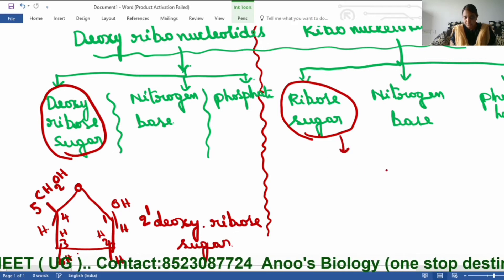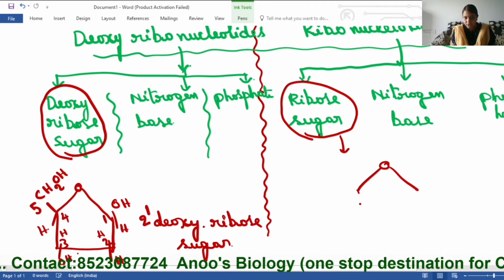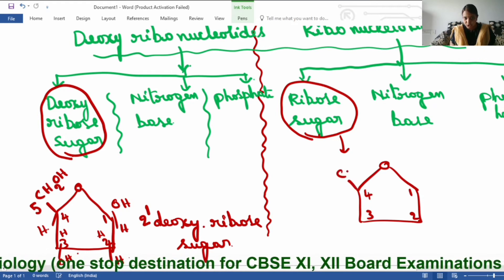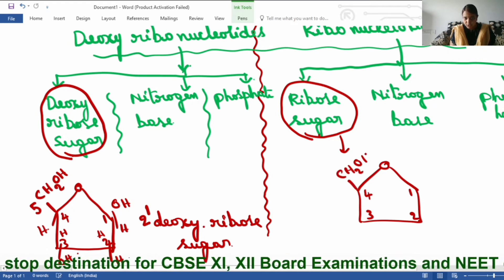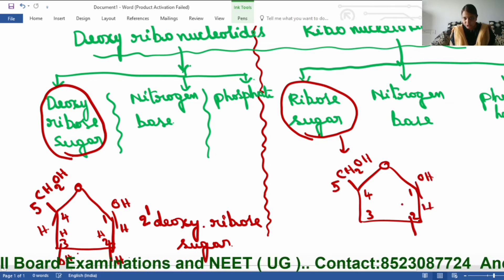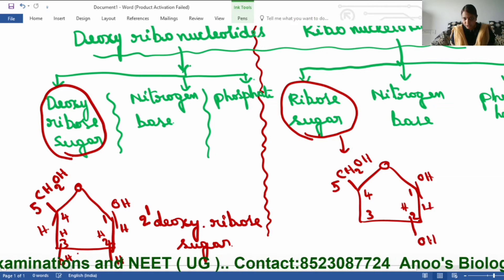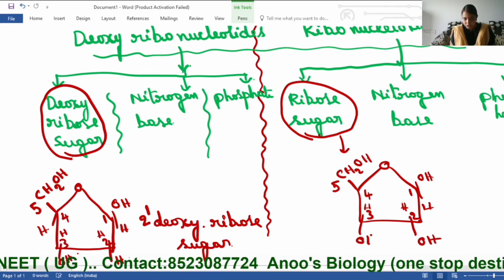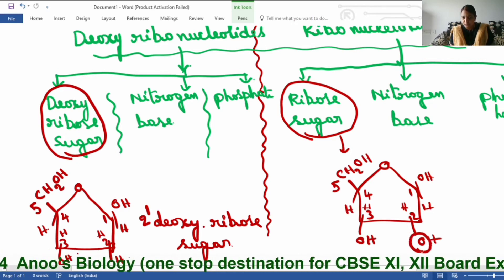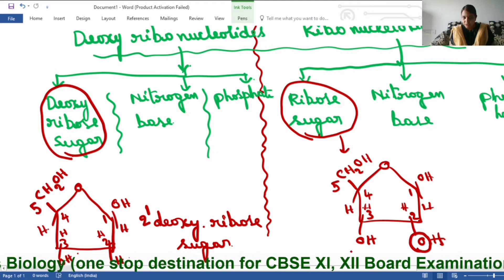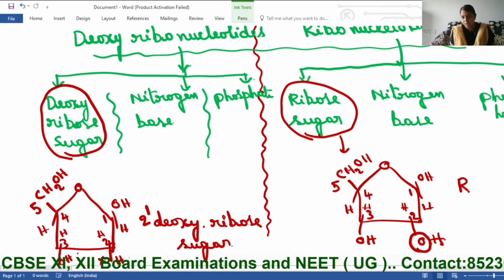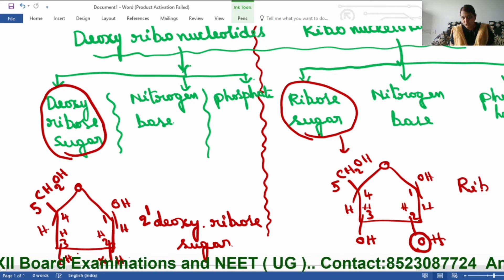Now coming to ribose sugar. In the case of ribose sugar, all the hydroxyl groups are present. At the first position: OH and H. At the second position: H and OH. At the third position: hydrogen and hydroxyl group. This oxygen at the second position is absent in deoxyribose sugar — so this is not deoxy. This is ribose sugar, with all the oxygens present.